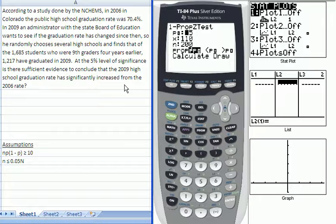According to a study done by the National Center for Higher Education Management Systems, in 2006 in Colorado the public high school graduation rate was 70.4%. In 2009 an administrator with the State Board of Education wants to see if the graduation rate has changed since then. So he randomly chooses several high schools and finds that of 1,685 students who were 9th graders four years earlier, 1,217 have graduated in 2009.